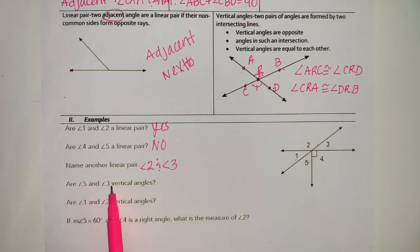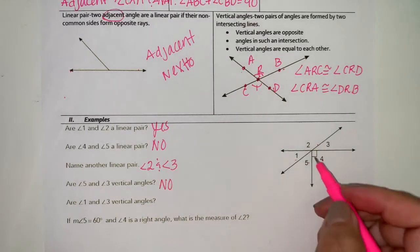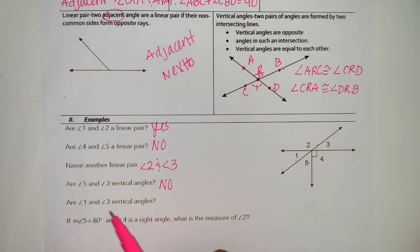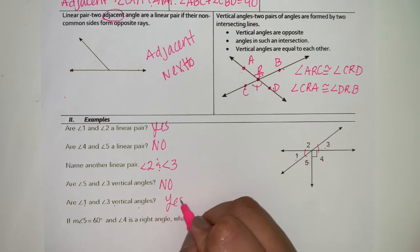Are five and three vertical angles? Five and three. No. They have to be exactly the same measure. Those are not the same measure. Are one and three vertical angles? One and three. They're exactly the same, so that's going to be a yes.